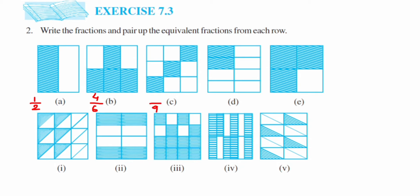The next figure has eight equal parts, out of which two are shaded, giving 2 upon 8. The next one has four equal parts, out of which three are shaded, giving 3 upon 4. Now we move to the next row.